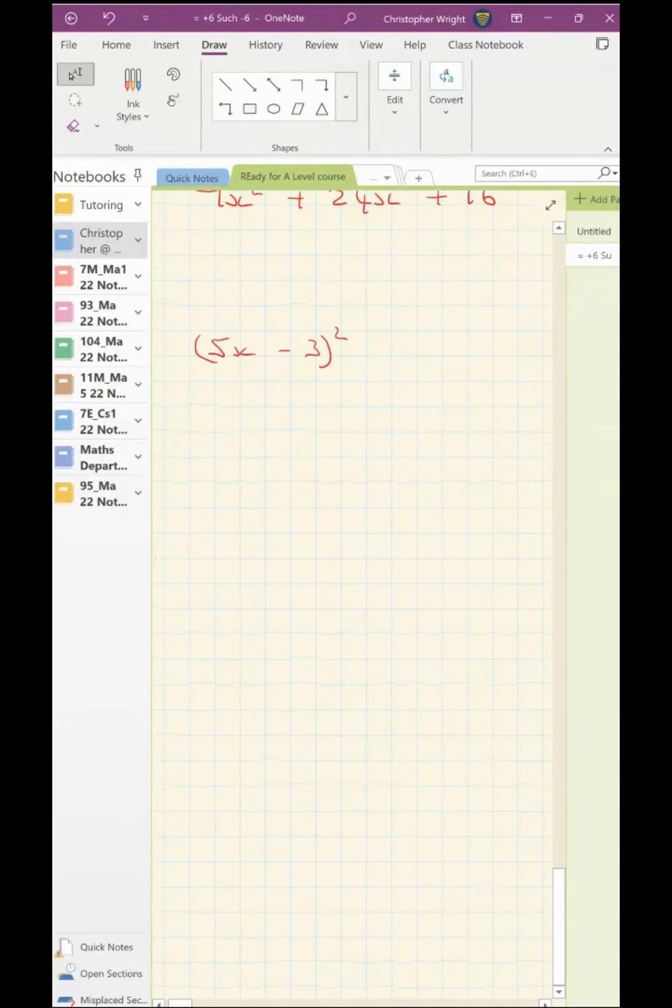Let's have a look at this one here, 5x minus 3 squared. I hope you can just write down the answer, but I'm going to write a middle line just to make it clear for the purposes of this film. That's going to give me 25x squared. The nose is minus 15x, and the mouth is the same, minus 30x plus 9 at the end.